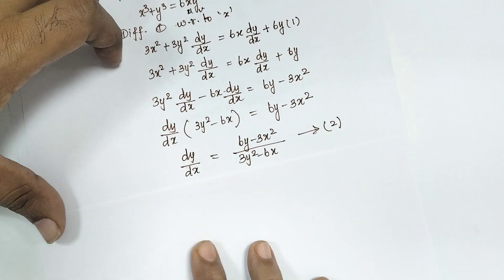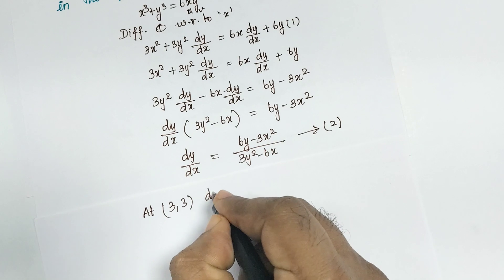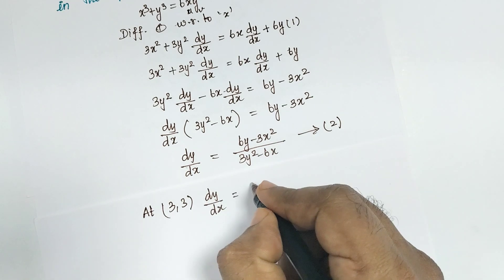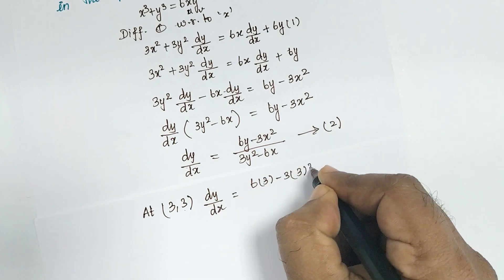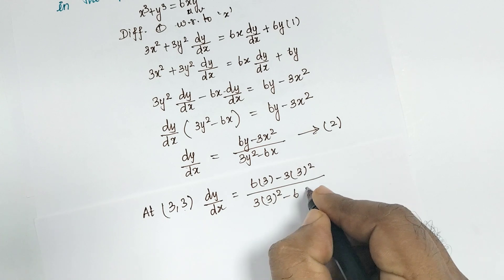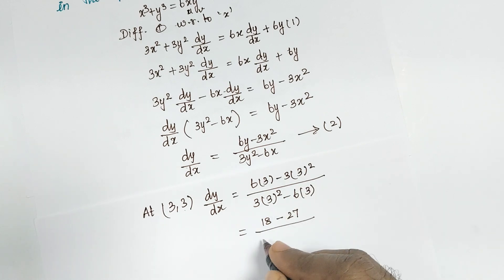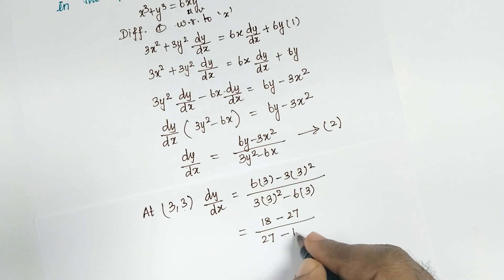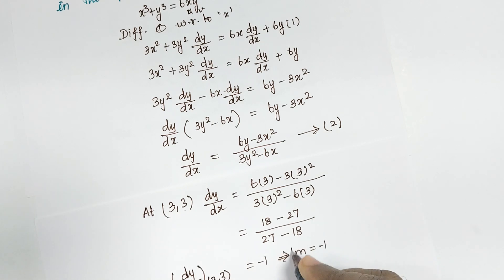We have to find the tangent equation at point 3 comma 3. dy/dx equals 6 into 3 minus 3 into 3 square, all divided by 3 into 3 square minus 6 into 3. That gives 18 minus 27 divided by 27 minus 18, equal to minus 9 divided by 9, so dy/dx at point 3 comma 3 equals minus 1, which is your slope m equal to minus 1.